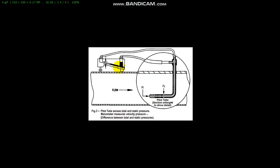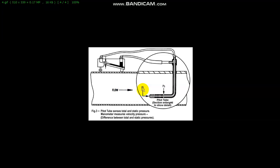As you can see, this is the manometer — the positive port of the manometer is connected to the total pressure port, and the negative port is connected to the static pressure. When you insert the pitot tube inside, it senses the total and static pressure, and the manometer measures the velocity pressure, which is the difference between total and static pressure. When inserting the pitot tube, make sure the tip is pointed directly in and is parallel to the airflow. If you position the pitot tube accurately, the velocity pressure indication will be at its maximum.